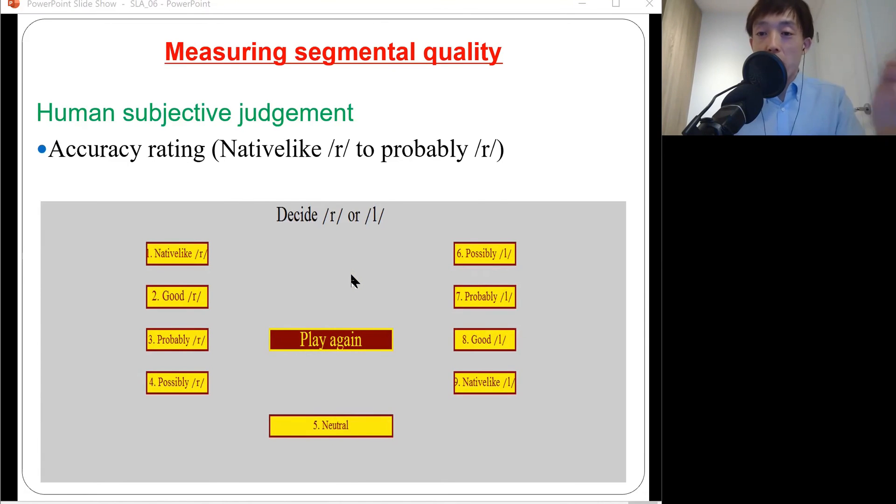Afterwards, we cut and edited all these spontaneous English R pronunciations among these Japanese participants, and we played these samples in a randomized order to native listeners of English, basically Canadians. All they were asked to do was to make a very quick judgment about how good their English R pronunciation was, but on a nine-point scale. One native-like R, two good R, three probably R, four possibly R, and five is somewhere in between, and six possibly L, seven probably L, eight good L, finally nine native-like L.